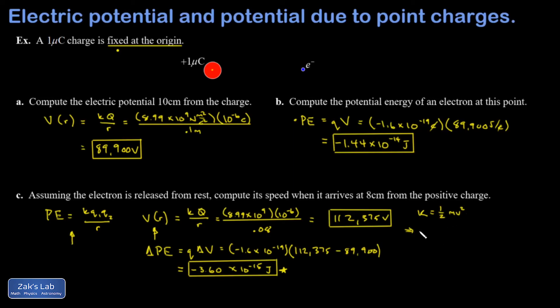And my kinetic energy is going to be positive 3.6 times 10 to the negative 15 joules. And this is something you need to look up. The electron mass is 9.11 times 10 to the negative 31 kilograms. When I crunch the numbers, I get 8.89 times 10 to the 7 meters per second.